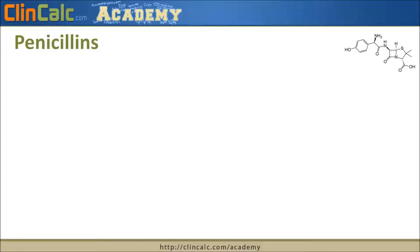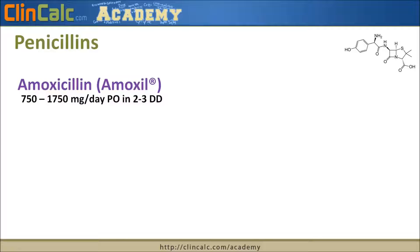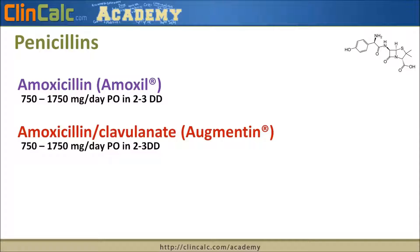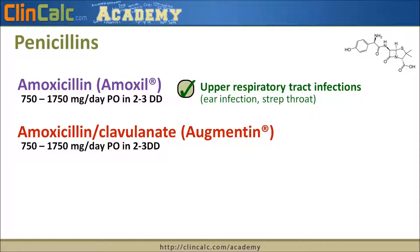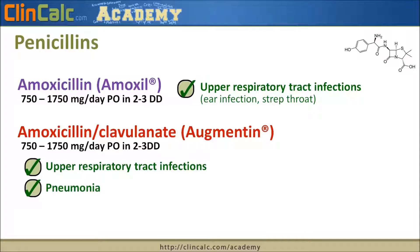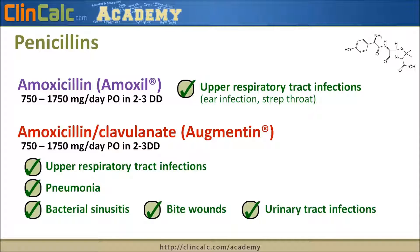The first drug class for beta-lactams are the penicillins. Amoxicillin, brand name Amoxil, and amoxicillin with clavulanate, brand name Augmentin. They're dosed the same, based on the amoxicillin component. Amoxicillin is typically used for upper respiratory tract infections — ear infections and strep throat. Augmentin, because of the clavulanate, also treats respiratory tract infections, but additionally treats pneumonia, bacterial sinusitis, bite wounds, and urinary tract infections. We gain a lot of antibacterial spectrum when we add on that clavulanate.